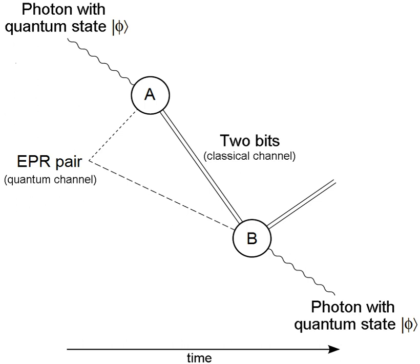The basic structure of a quantum network and more generally a quantum internet is analogous to a classical network. First, we have end nodes on which applications are ultimately run. These end nodes are quantum processors of at least one qubit. Some applications of a quantum internet require quantum processors of several qubits as well as a quantum memory at the end nodes. Second, to transport qubits from one node to another, we need communication lines. For the purpose of quantum communication, standard telecom fibers can be used.